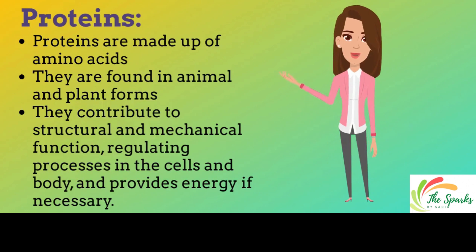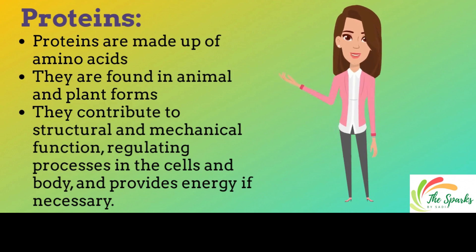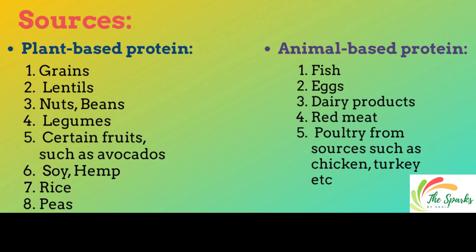The second important macronutrient is protein. Proteins are made up of amino acids. They are found in animal and plant forms. They contribute to structural and mechanical function, regulating processes in the cells and body, and provide energy if necessary. Plant-based sources of protein include grains, lentils, nuts, beans, legumes, certain fruits such as avocados, soy, hemp, and rice. Animal-based sources of proteins include fish, eggs, poultry, and red meat.